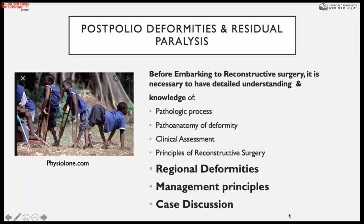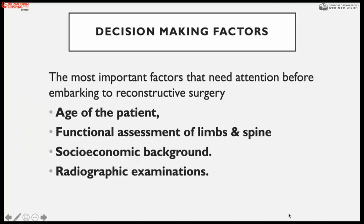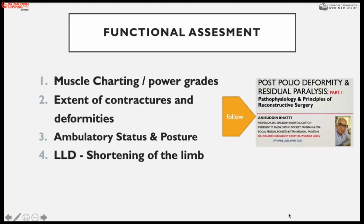We have already discussed the principles of poliomyelitis development and treatment, covering pathological processes, pathological anatomy, clinical assessment, and principles of reconstructive surgery including tendon and muscle transfers. Today we cover regional deformity management and case discussion particularly in the lower limb. Decision-making involves multiple factors: age of the patient, functional assessment of the limb and spine, socio-economic background, availability of continuous physiotherapy, and radiological assessment of deformities.